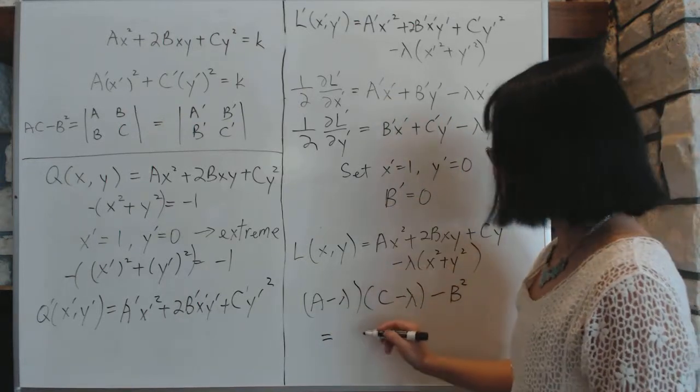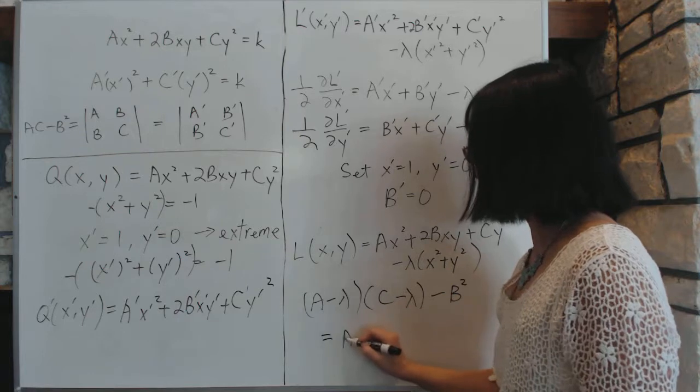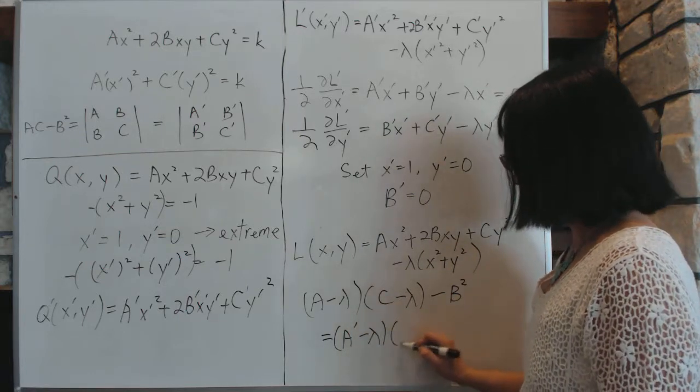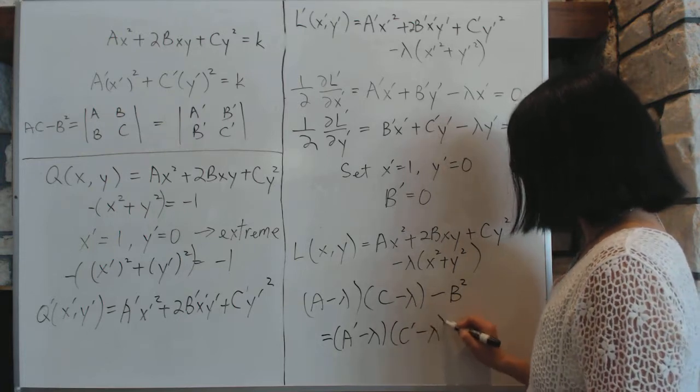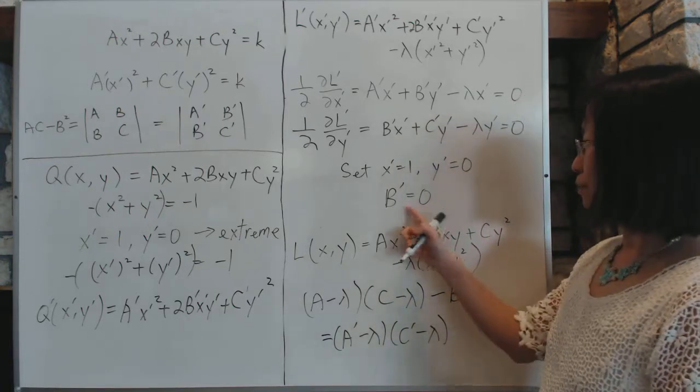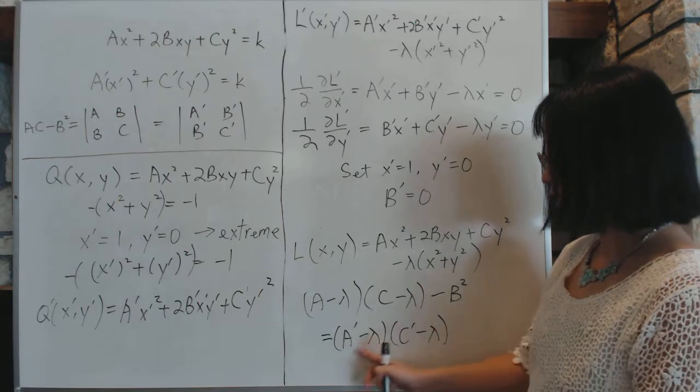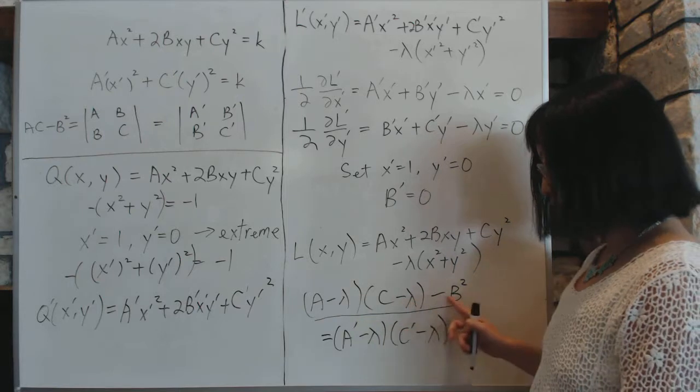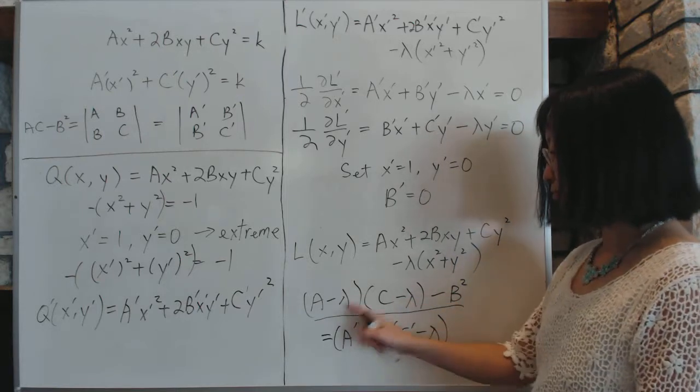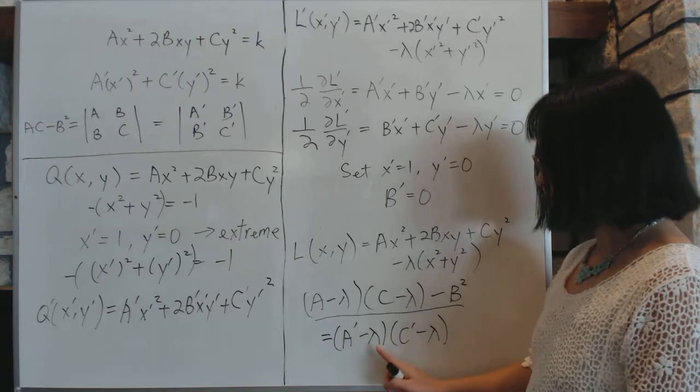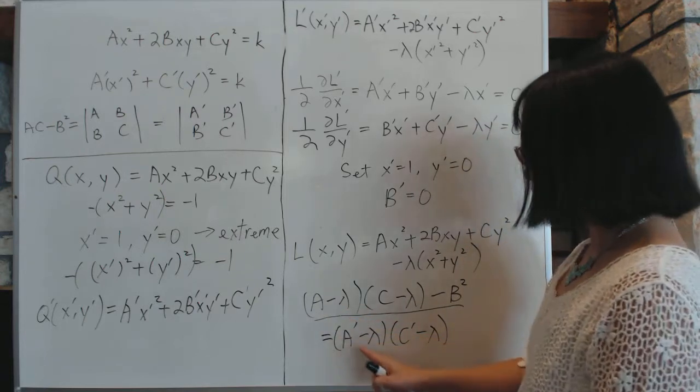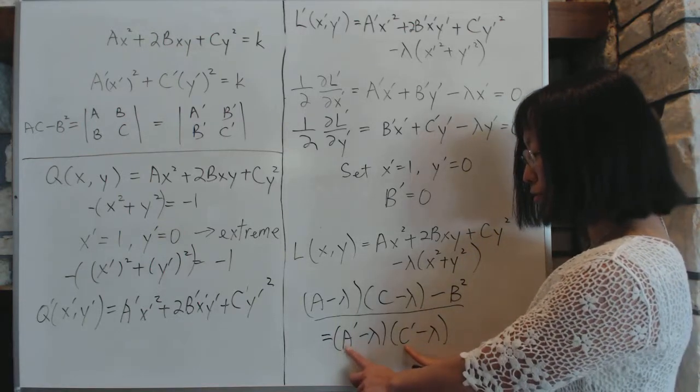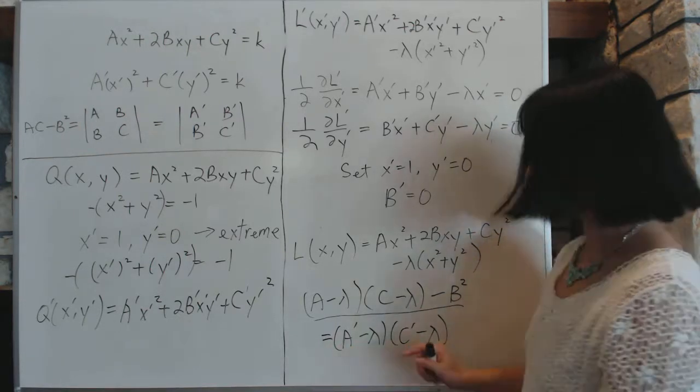It's going to be equal to the same way on a prime, so (a prime minus lambda)(c prime minus lambda), and here's the trick: b prime is zero. So this value is exactly the same as this value. Now in this particular polynomial here, you have lambda that is identical, there's also lambda here. And so this equation, as you can see, this polynomial effectively has two roots, and the two roots are exactly a prime and c prime.